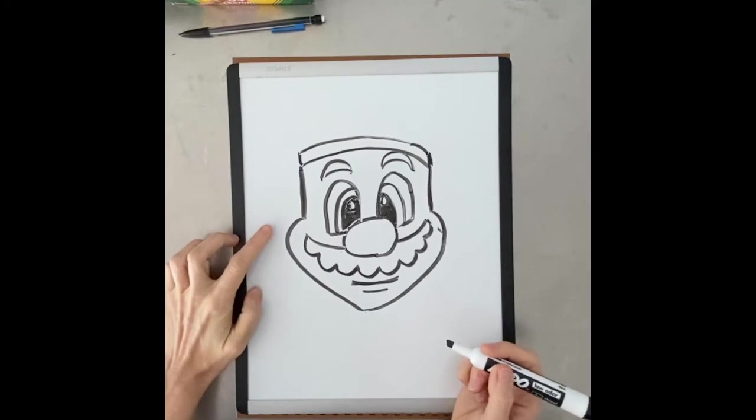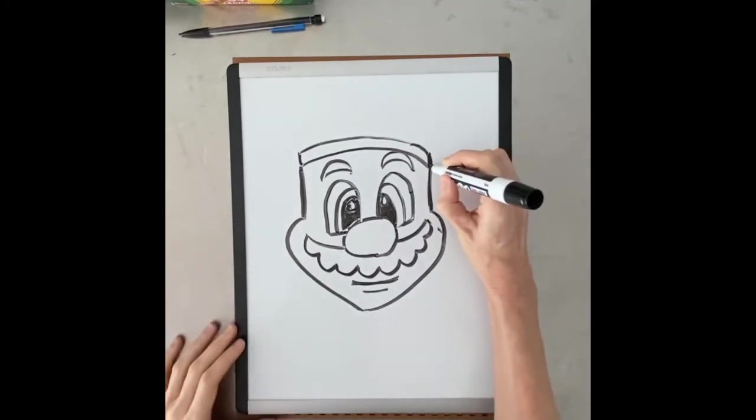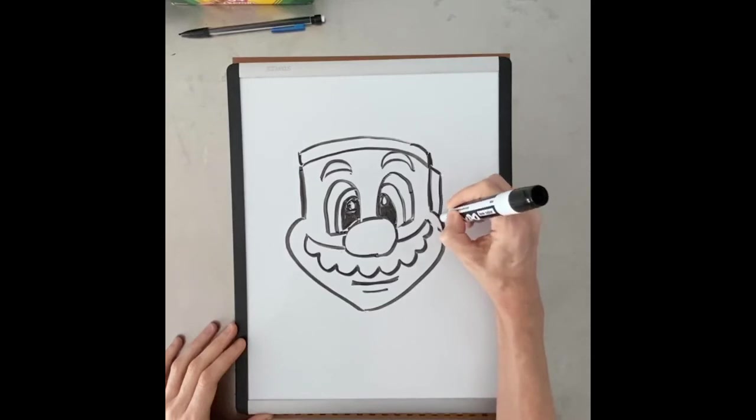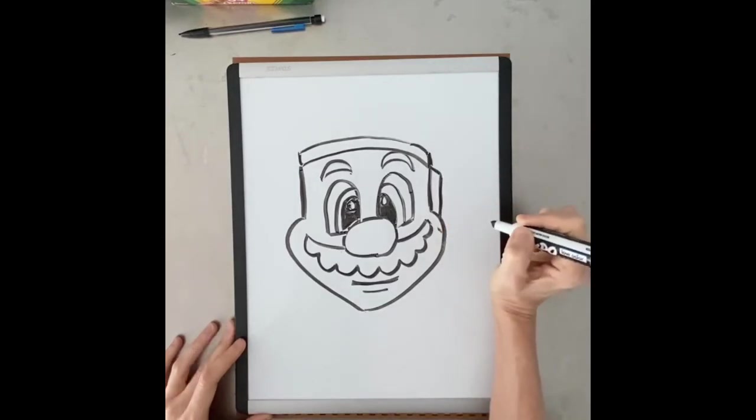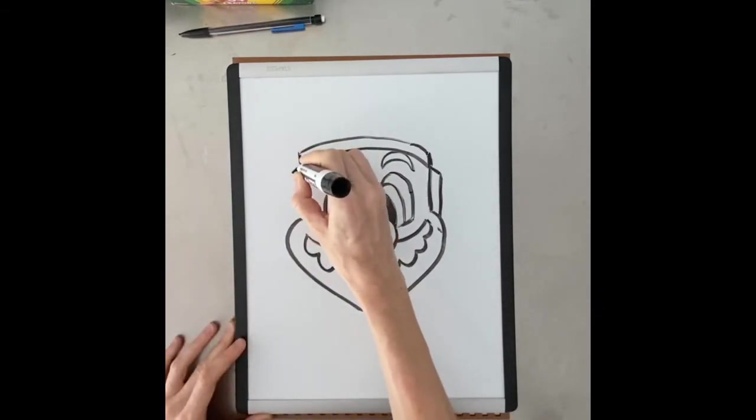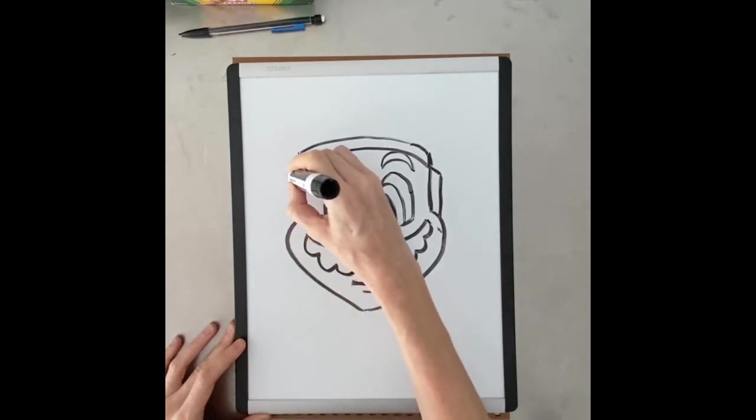You doing okay? Great. We'll add in his sideburns or the side of his hair. It's going to be a small line out from where his hat is and then down onto his cheek. We'll do it on the other side too.